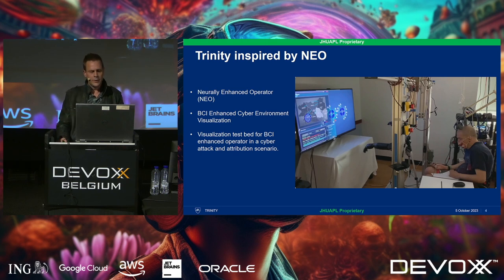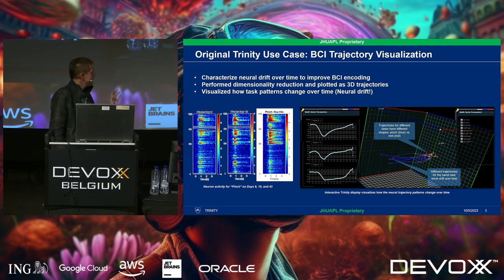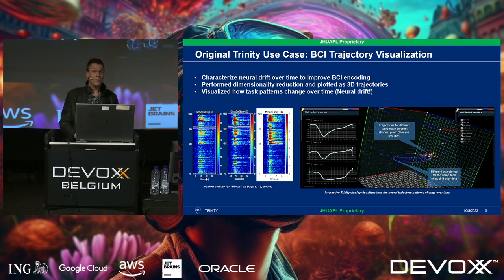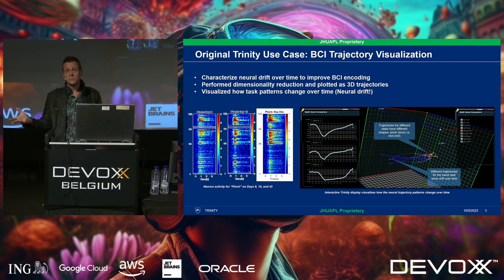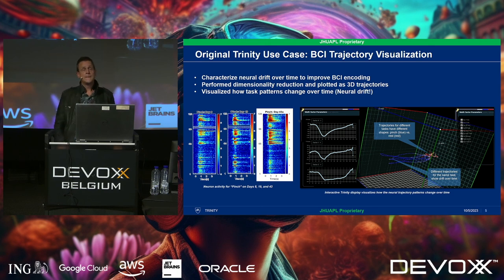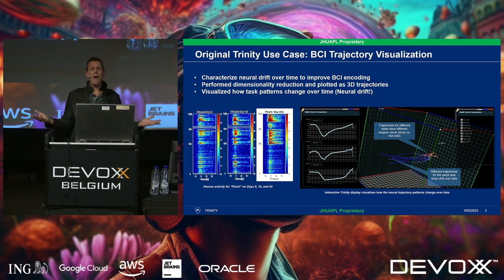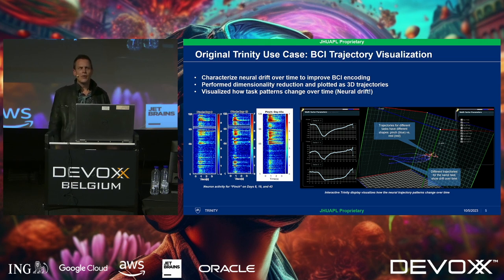The participant is quadriplegic with only partial functionality in one arm to move a mouse, so it's a pain for him to get into the hospital. But they had to have him lay down, hook him up, and make him repeat the same actions over and over again to train their models — every day for an hour, hour and a half. You've got the only person in the world with this thing jacked into his head, and you're wasting 20–25% of your time with him just retraining your model?